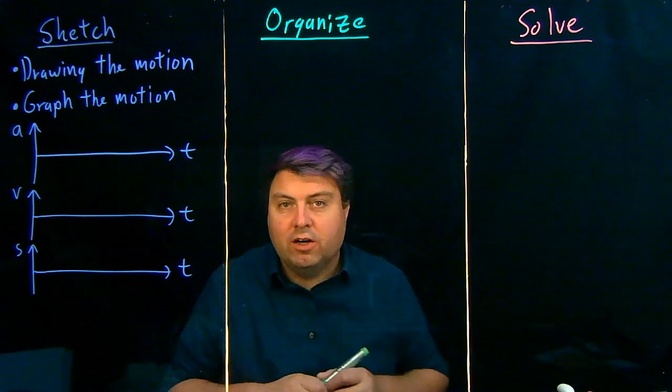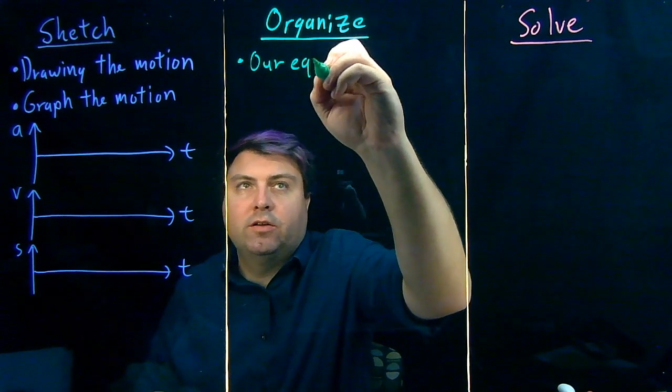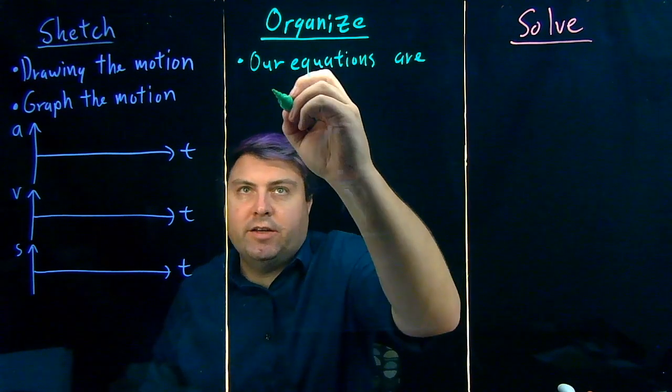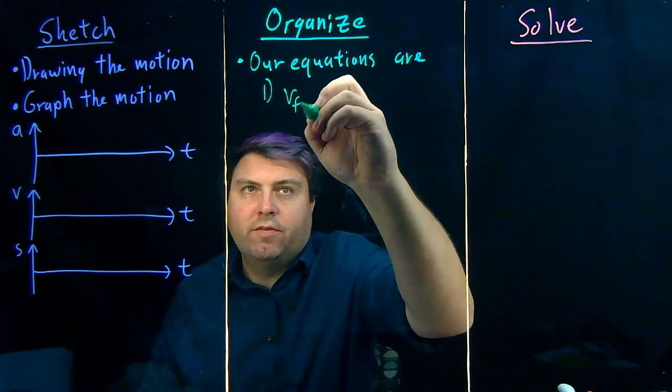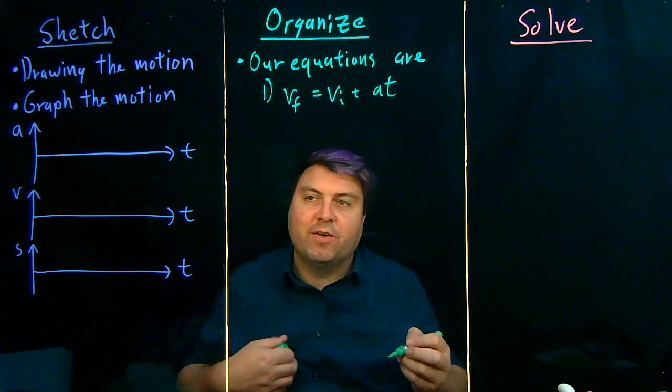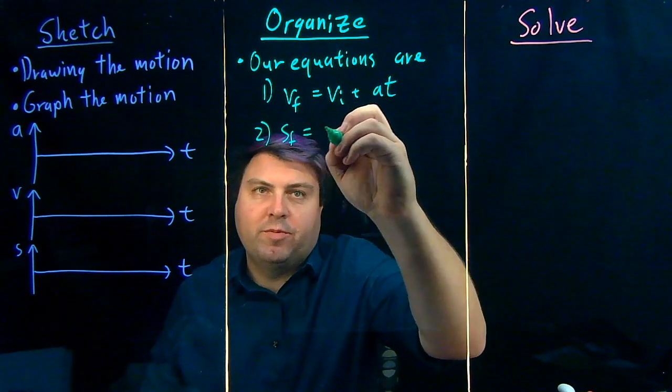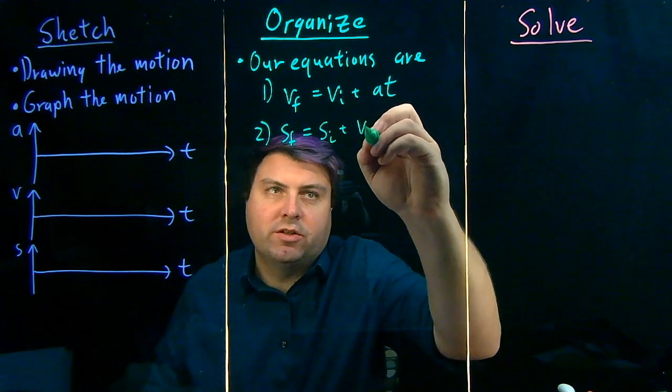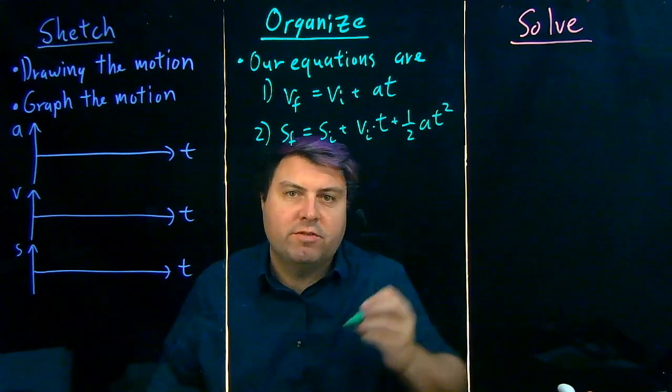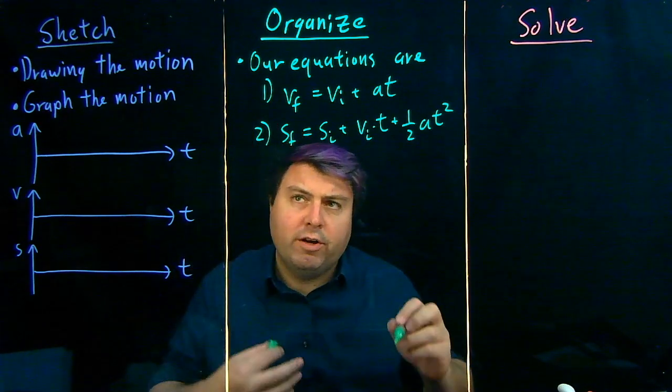For our organize, we start with our equations. For one-dimensional kinematics, equation number one: final velocity equals initial velocity plus acceleration times time. We're not going to worry about vectors since we're just dealing in one direction. And equation two: final position equals initial position plus initial velocity times time plus one half the acceleration times time squared. So we are always thinking about which equation to use and how to do that.